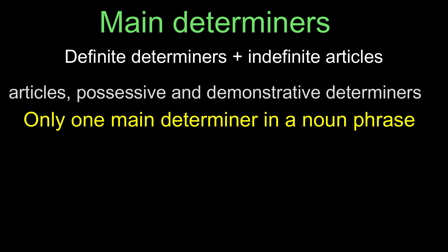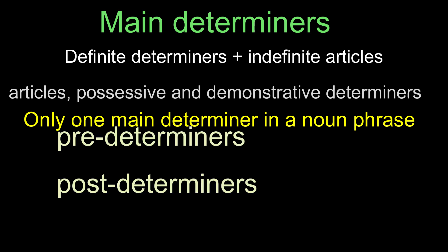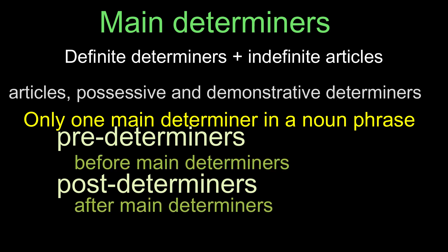For example — Correct: 'This dog,' 'My dog,' 'A dog.' Incorrect: 'My this dog,' 'This my book.' All other determiners can be placed either before the main determiner (predeterminers) or after the main determiner (post-determiners).